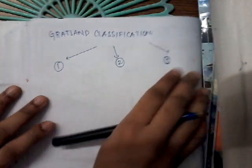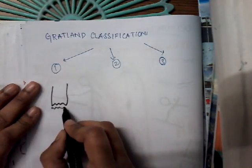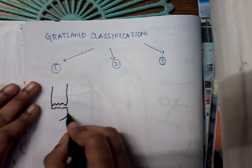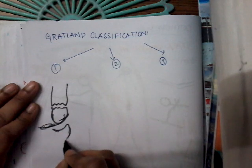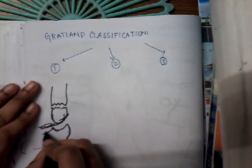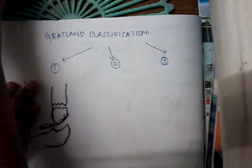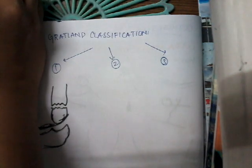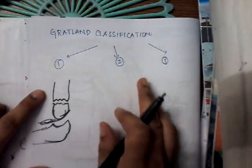In Gartland Type 1, the fracture is present but there is no displacement — you can just see a fracture line. This is Type 1 Gartland's fracture.